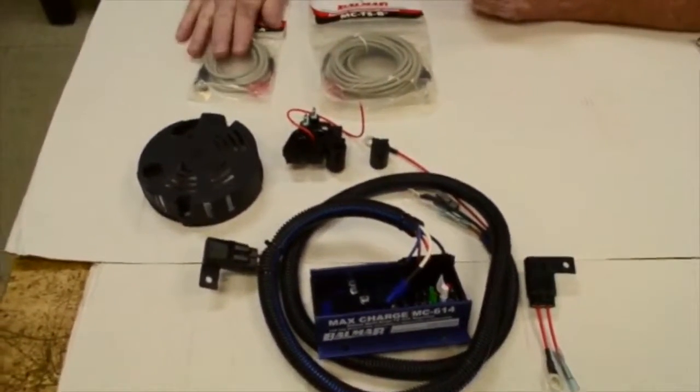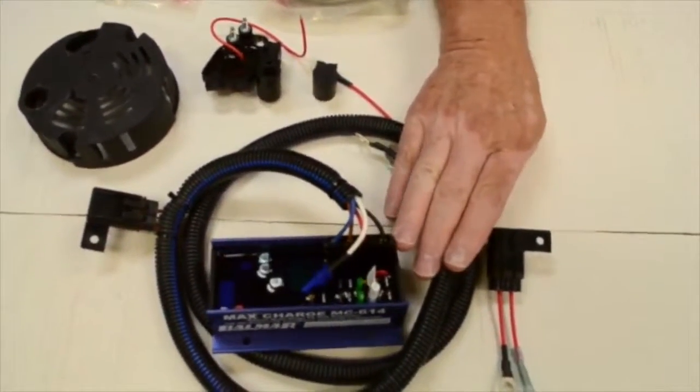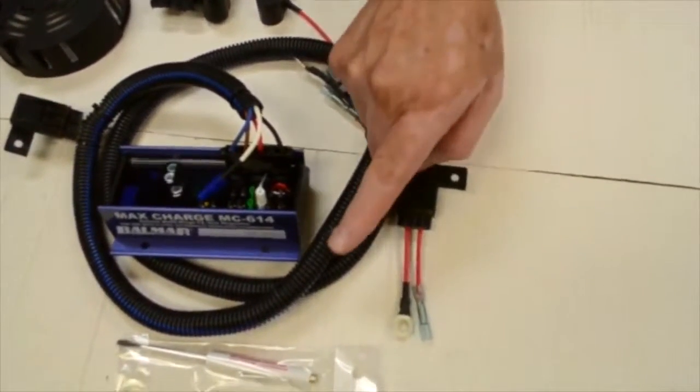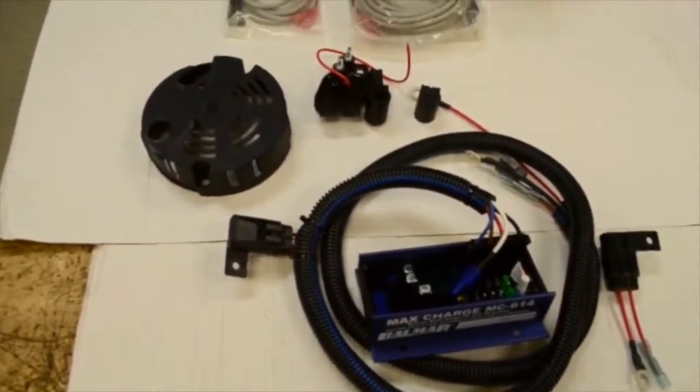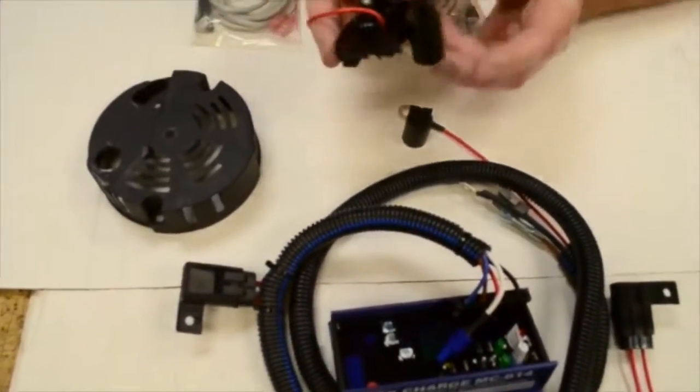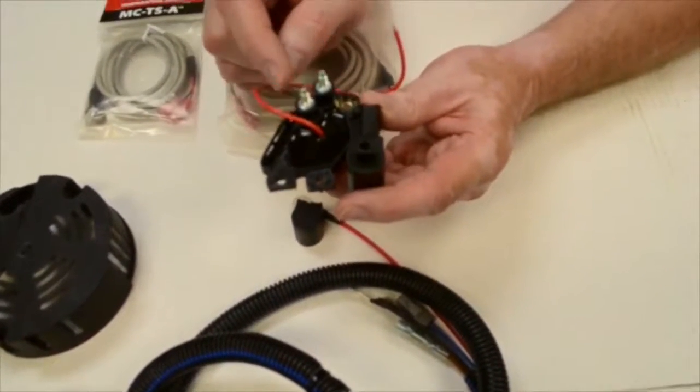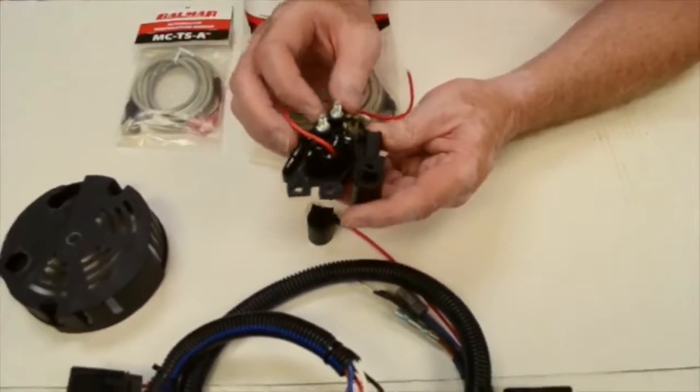This is everything you receive in the kit. The alternator temperature sensor, the battery temperature sensor, the MC614 regulator, along with its fuse for the sensing wire. You get the programming tool. And also, the main part of this is the regulator that we're going to replace the stock regulator with.